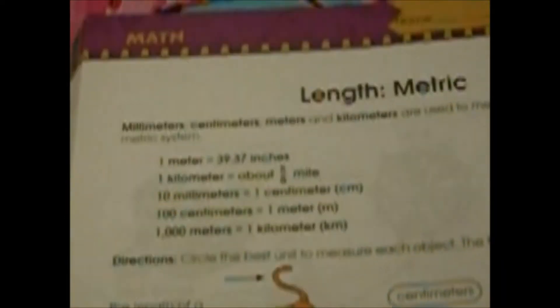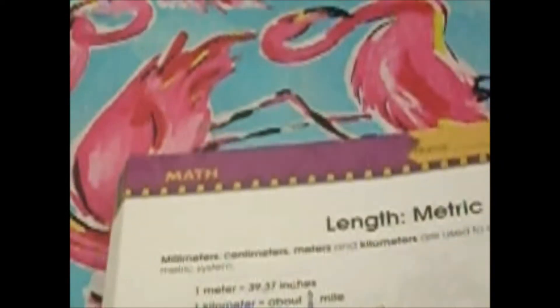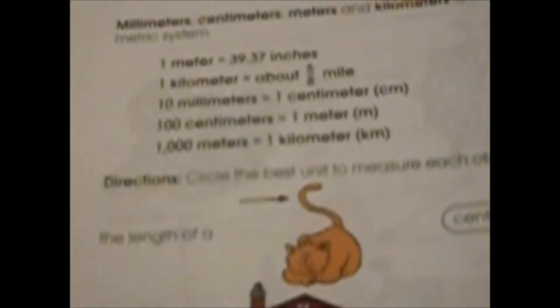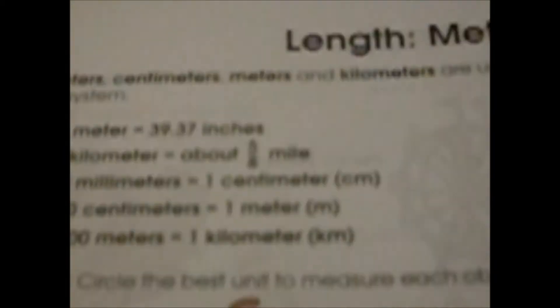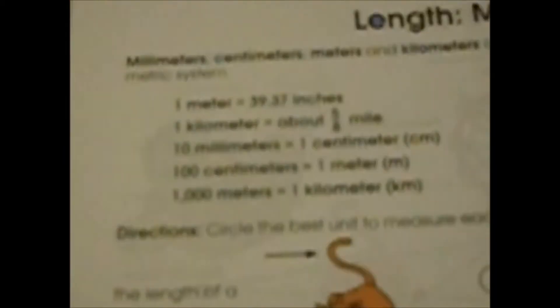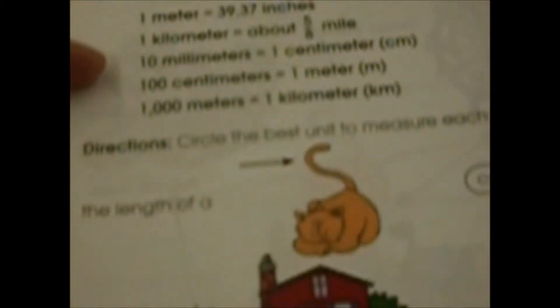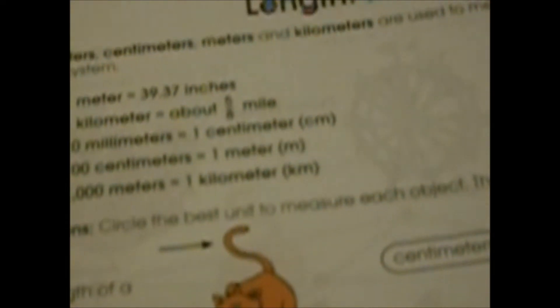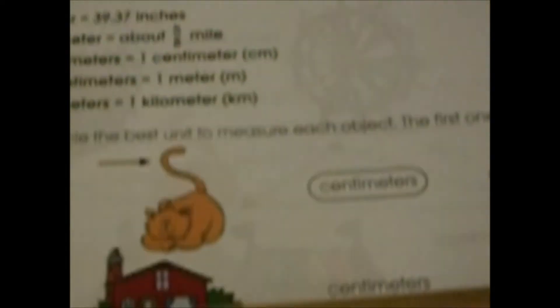Now this is where we talk about metric and this is what most of the rest of the world uses. Once again we have our handy dandy little cheat sheet. We're going to look at the grasshopper - the length of a grasshopper: centimeters, meters or kilometers. If you think about it, a grasshopper is not very big and we're going to have to find the smallest option.